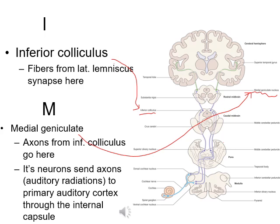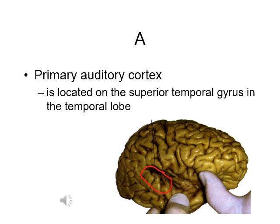Action potentials pass through the lateral lemniscus and synapse with neurons inside the inferior colliculus. Axons then go to the medial geniculate nuclei, and neurons there send axons to the primary auditory cortex, passing through the internal capsule. The primary auditory cortex is located on the superior temporal gyrus.